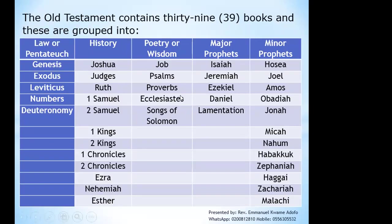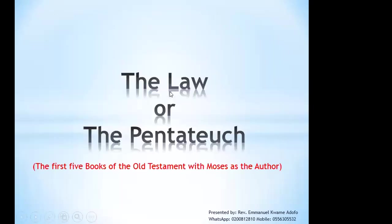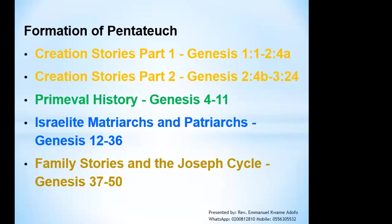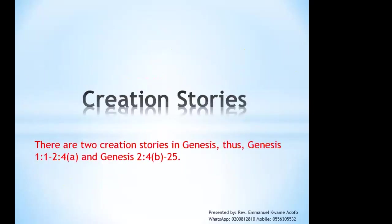So these are the books that make up the Old Testament, and they have been grouped into five major groups. Looking at our study today, we are focusing on Genesis chapter 1 to chapter 11. We are looking at the law, which has to do with the first five books of Moses — the Pentateuch. But we are centering ourselves on Genesis.